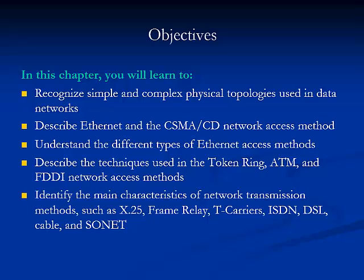In this module, you will learn to first recognize simple and complex physical topologies used in data networks. You'll also be able to describe Ethernet and the CSMA/CD network access method, understand the different types of Ethernet access methods, describe the techniques used in Token Ring, ATM, and FDDI network access methods, and identify the main characteristics of network transmission methods such as X.25, Frame Relay, T-carriers, ISDN, DSL, cable, and SONET.